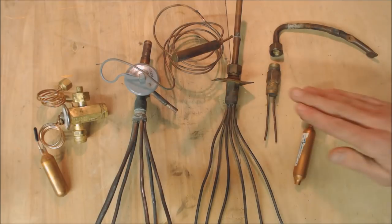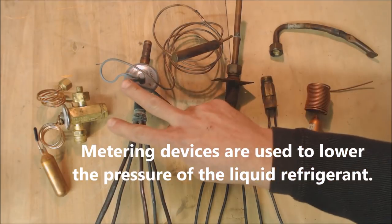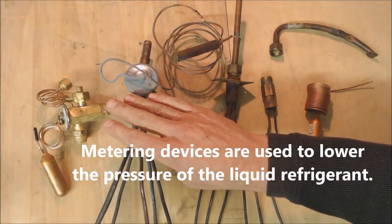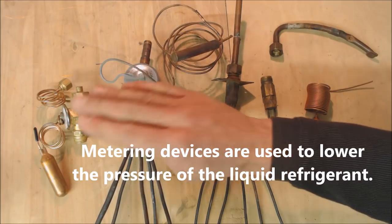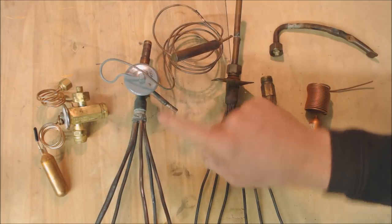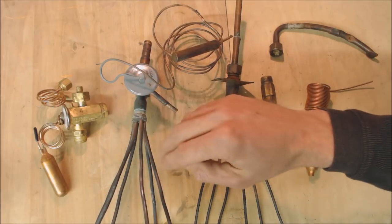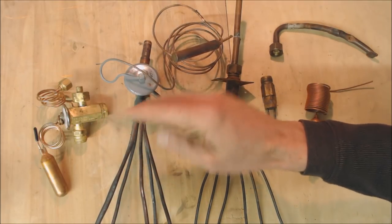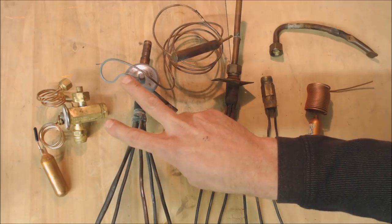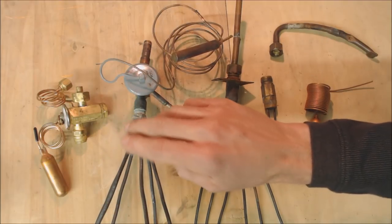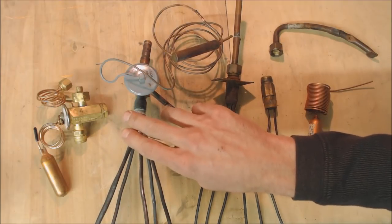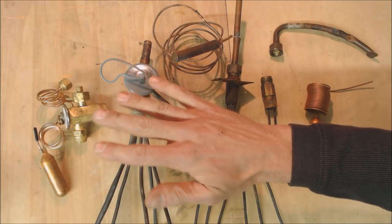Here we have three samples of metering devices. These are thermostatic expansion valves, also referred to as TEV or TXV. The ones that have an adjuster on the bottom allow you to adjust the spring pressure, and you're typically going to find them in refrigeration. These two come out of air conditioning systems and they have non-adjustable springs in the bottom.